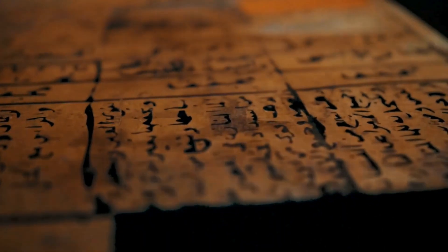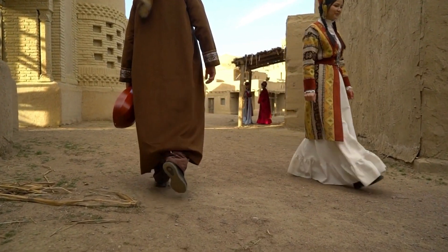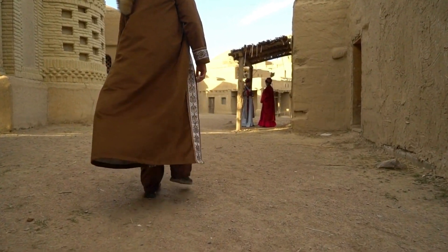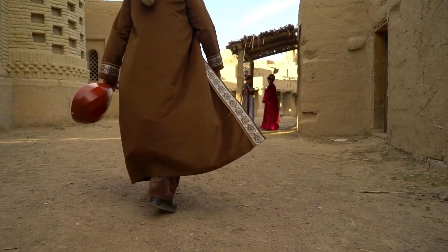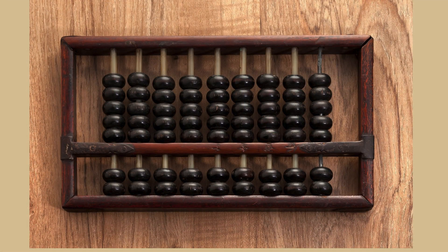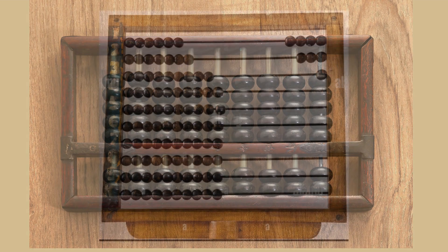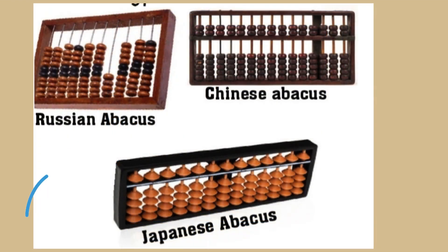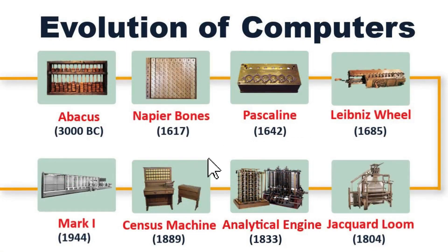Because of this, man always wanted to find a solution to that pressing matter. Back in 3000 BC, we discover that in China they came up with a simple mechanical machine which they called the abacus. Back then, this was considered a great innovation and achievement in man's pursuit of finding something helpful in matters of calculations and counting.